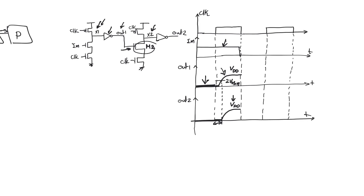We also have to consider the case when input-one is equal to zero, in case we solved one problem and created another. During the second pre-charge, X1 is going to pre-charge to VDD, which causes out-one to discharge to zero. X2 is also going to pre-charge to VDD, which causes out-two to go down to zero. Out-one and out-two take some time — the propagation delay of the static inverters — but that's fine. We enter the second evaluate phase with output-one and output-two equal to zero volts.